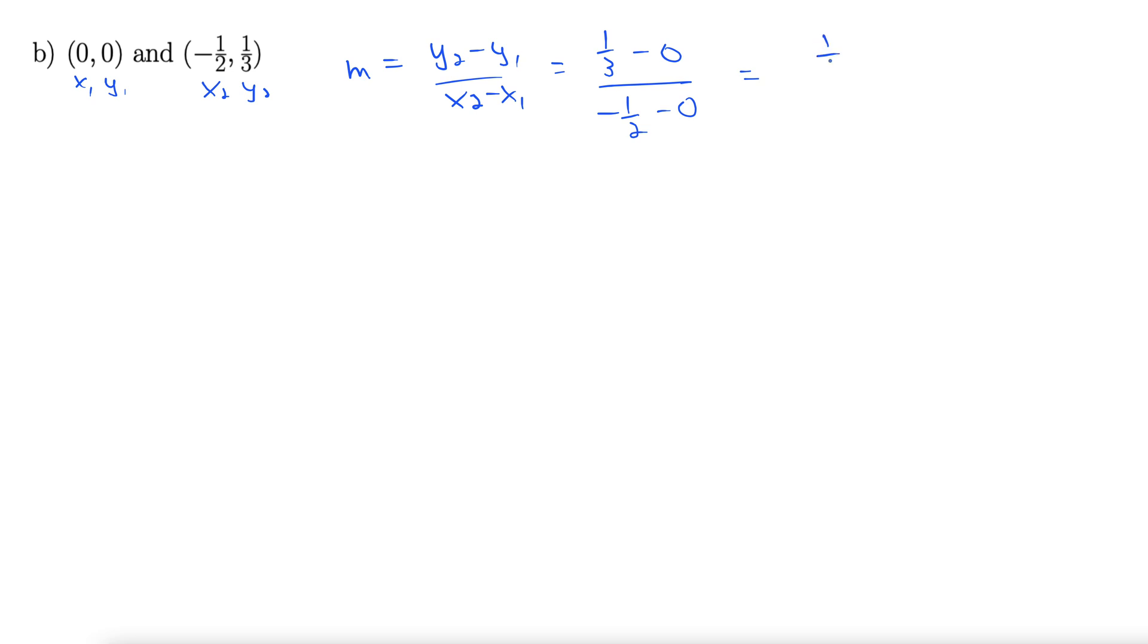1/3 divided by negative 1/2. When you divide a fraction by another fraction, take the one on the bottom, flip it, and multiply. We call that multiplying by the reciprocal. This is 1/3 times negative 2 over 1, which comes to negative 2/3. There is our slope.